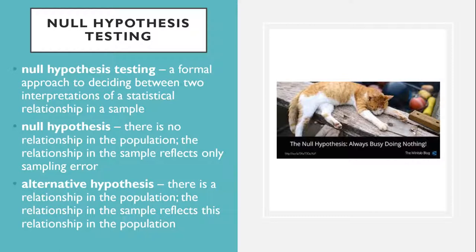The logic of null hypothesis testing. Null hypothesis testing — often called null hypothesis significance testing, or NHST — is a formal approach to deciding between two interpretations of a statistical relationship in a sample. One interpretation is called the null hypothesis, often symbolized as H₀. This is the idea that there's no relationship in the population, and that the relationship in the sample reflects only sampling error. Informally, the null hypothesis is that the sample relationship occurred by chance.